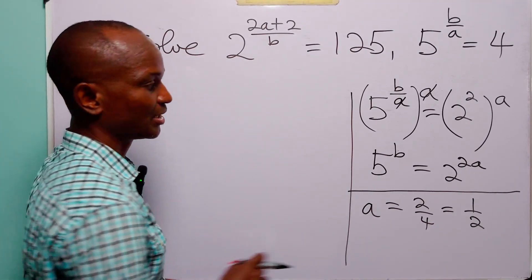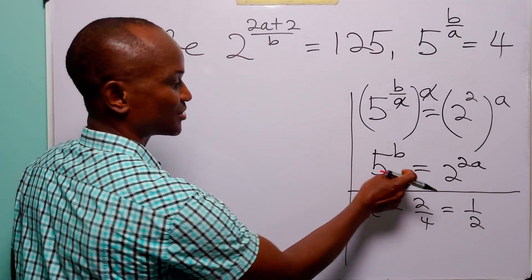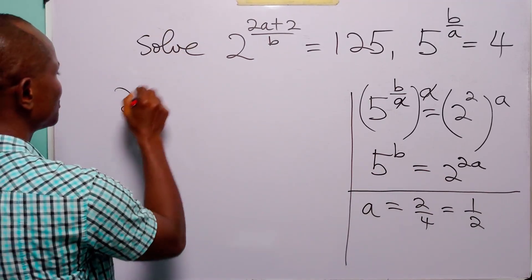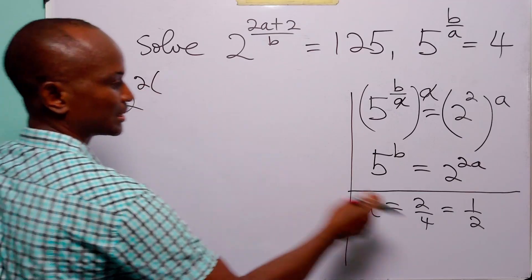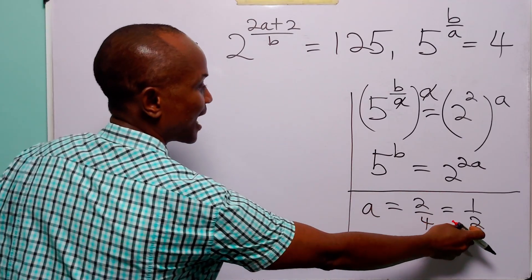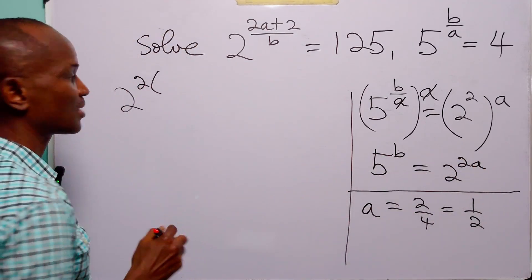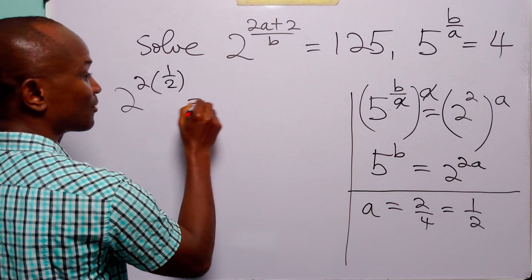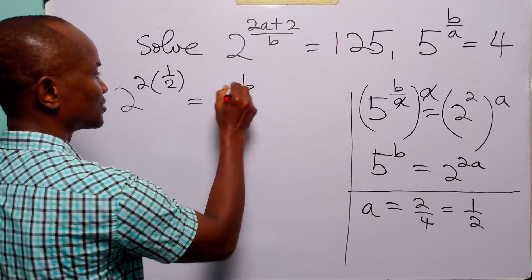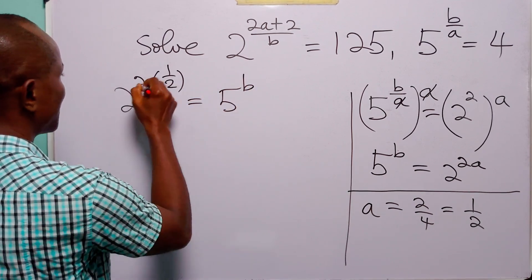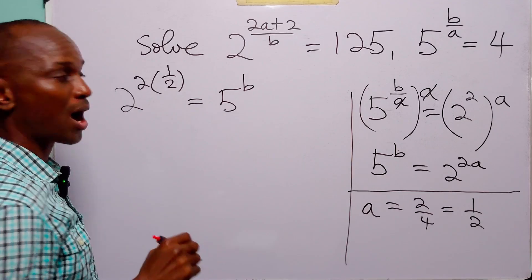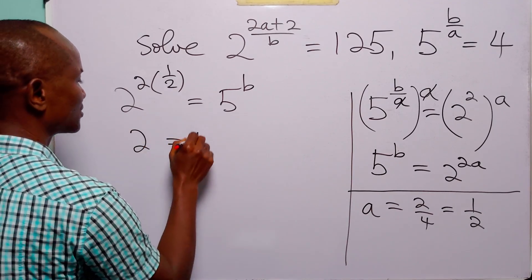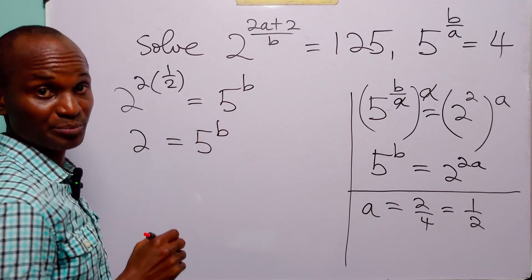To find the value of B, we come back to the equation 5 to the power B equals 2 to the power 2A. Substituting A equals 1/2, we get 2 to the power (2 times 1/2). Since 2 times 1/2 is 1, we have that 2 equals 5 to the power B.